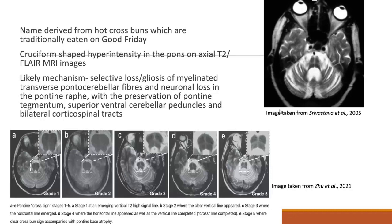Previous studies have postulated different grades of the hot cross bun sign. In Grade 1, there is a slight appearance of a vertical line. In Grade 2, there is more emergence of the vertical line. In Grade 3, there is the appearance of a horizontal line. In Grade 4, there are more prominent features of both vertical and horizontal lines. In Grade 5, the most advanced stage, alongside a significant cross-shaped appearance, there can also be associated pontine atrophy.